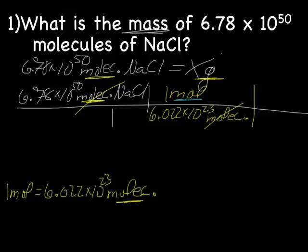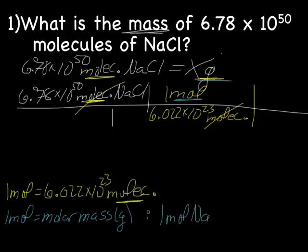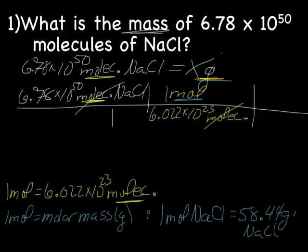We're trying to get to mass, so this time we'll use one mole equals molar mass in grams. We get the molar mass off the periodic table. We have one mole NaCl. We need to add up the molar masses of both one sodium and one chlorine. Sodium has a molar mass of 22.99 grams, and chlorine is 35.45 grams. So when we add that up, we end up with 58.44 grams NaCl. We have four sig figs for sodium, four sig figs for chlorine, and so our answer is going to be four sig figs.